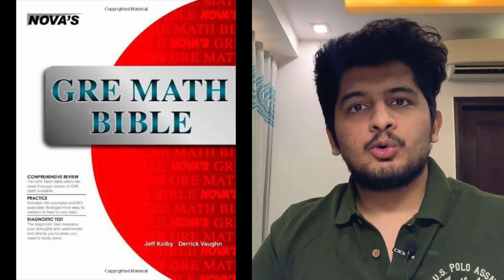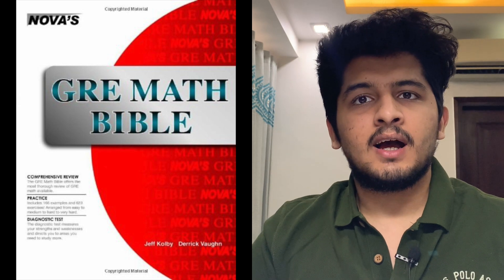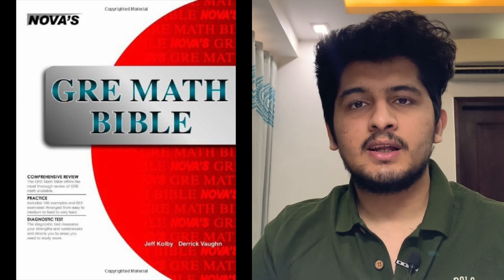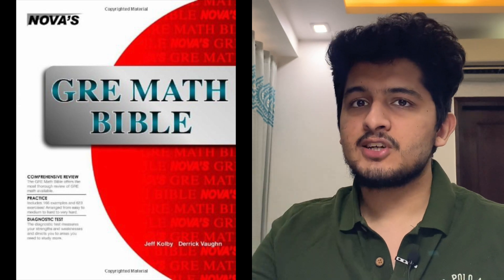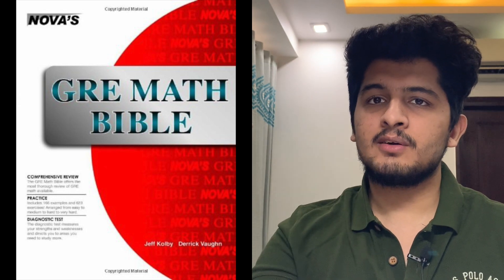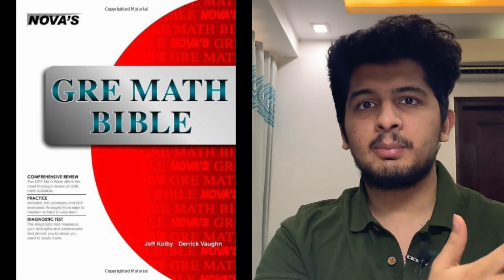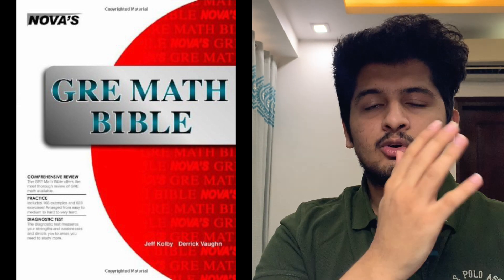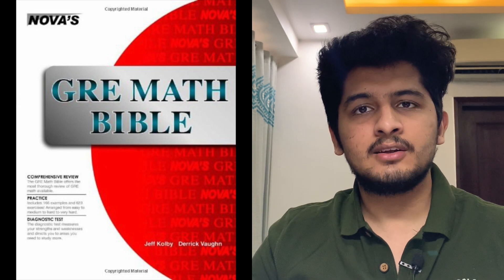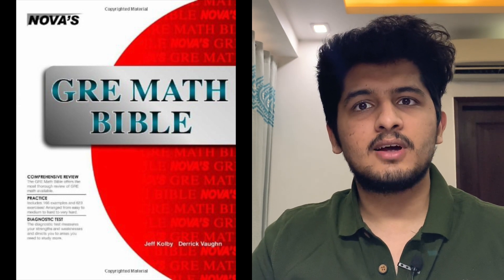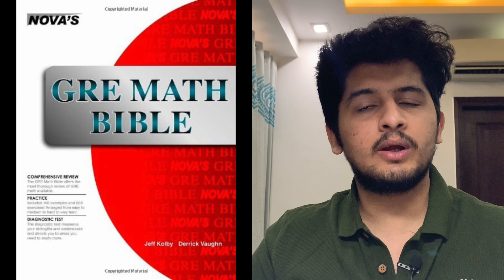The first book for the GRE quant section is Nova's GRE Guide, and it is like the masterpiece of the GRE quant section. It has around 23 chapters, each corresponding to a different topic — for example, linear equations, quadratic equations, and decimal ratios. This book teaches a lot of shortcuts and the difficulty level keeps increasing progressively, so it is a must-do book for the quant section.